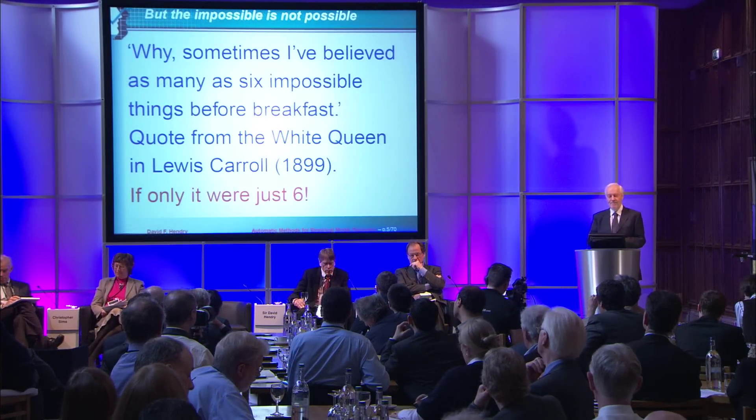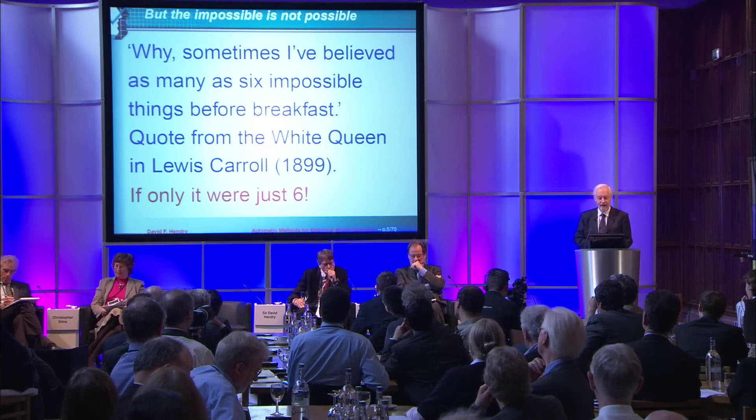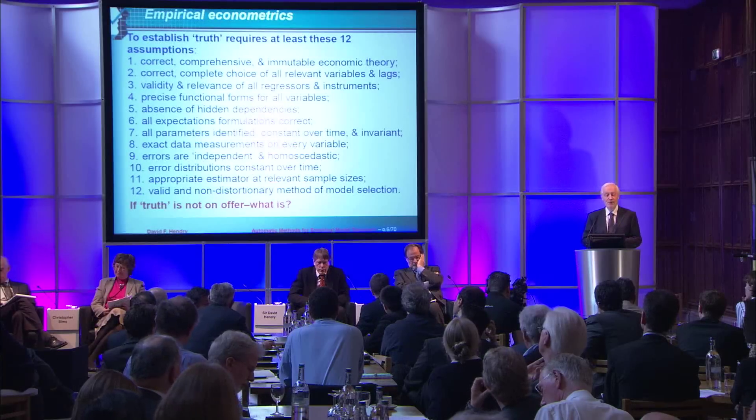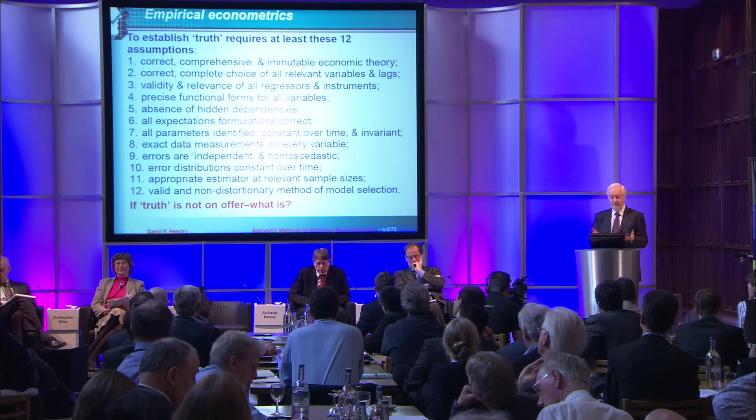As the White Queen said through the looking glass, 'I've believed as many as six impossible things before breakfast.' If only it were just six. Here are 12 things you would need to believe for some of these models: that the model is correct, comprehensive, and immutable; that you have all relevant variables and lags; a valid choice of instruments and regressors; the right functional form for every variable; no hidden dependencies; correct expectations formulations; all parameters identified and constant; exact data measurements; well-behaved errors; constant error distributions; the appropriate estimator; and a valid method of model selection. So truth's not on offer. So what is?